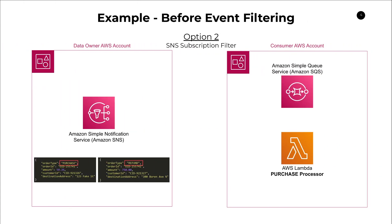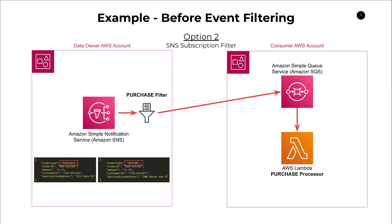Option two came along a couple years later: the SNS subscription filter. This was a bit better. What this option required was that on the data owner account — the SNS topic owner — you'd have to ask them to set up a filter policy, in this case a purchase filter. The topic owner would create a filter that looks at the order type field and only publishes messages to a certain subscriber when the order type matches the filter criteria. Whenever a message gets published into the topic, it runs through this filter, sees the order type is purchase, and sends that message to the queue, which then invokes the Lambda function.